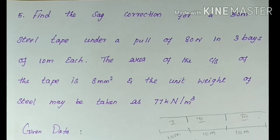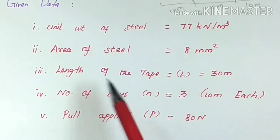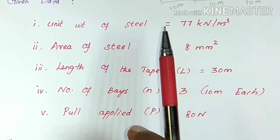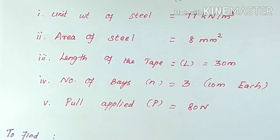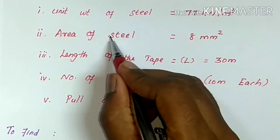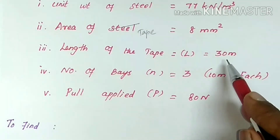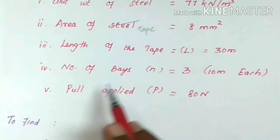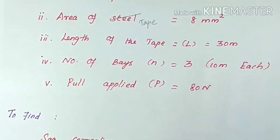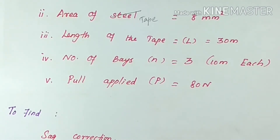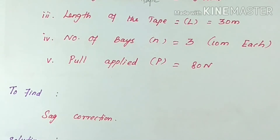Now the given data: unit weight of steel is 77 kN per meter cube. Area of tape is 8 mm². Length of tape capital L is 30 meters. Number of bays small n is 3, and the length of each bay is 10 meters. The pull applied capital P is 80 N. To find: sag correction.